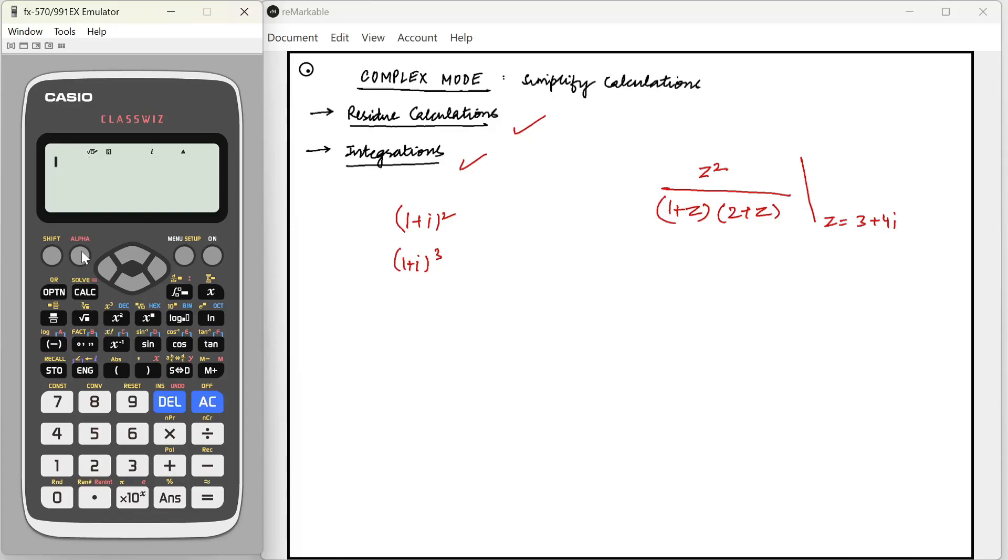Now I can write A square. Now I have to calculate z square by one plus z into two plus z, so I can write A square divided by one plus A into two plus A, and that will straight away give us whatever answer we need.